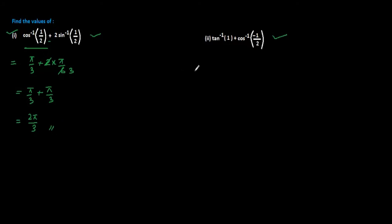Now, coming to this question. Tan inverse 1 plus cos inverse minus 1 by 2. First part tan inverse 1, it is positive value we can write it directly. Tan at which angle it becomes 1? Pi by 4. We are writing pi by 4.